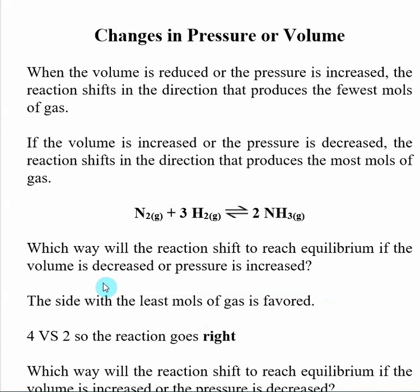We've already decided that the left-hand side has 4, the right-hand side has 2. So the right-hand side has the fewest number of moles of gaseous species. So if we decrease the volume or increase the pressure, the reaction is going to shift to the right.